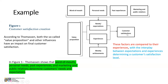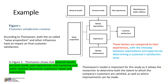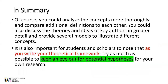The interaction between all factors — expectations and experiences — determines the level of customer satisfaction. The dependent variable depends on all these elements: experiences and expectations. Thomason's model is important for this study as it allows the researcher to determine both the extent to which the company's customers are satisfied as well as where improvement can be made. You could analyze the concept more thoroughly and compare additional definitions, discuss the theories and ideas of key authors in greater detail, and provide several models to illustrate different concepts.